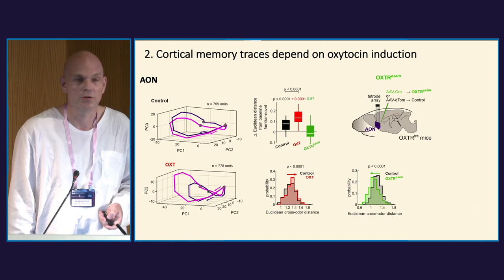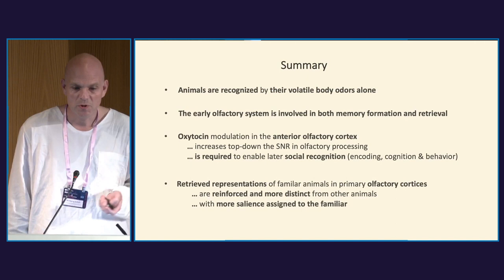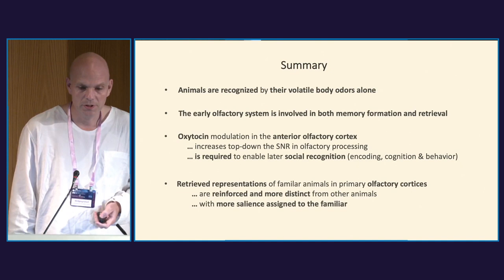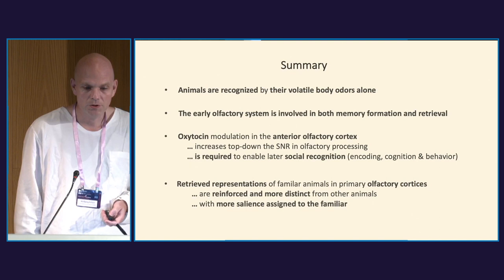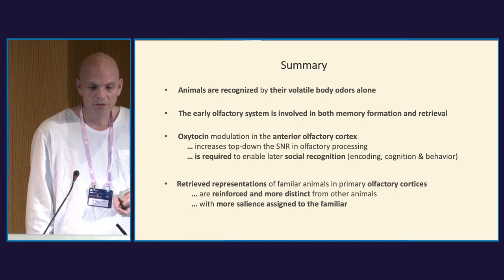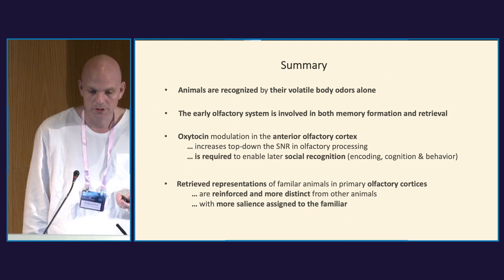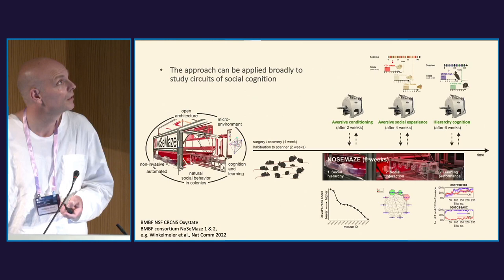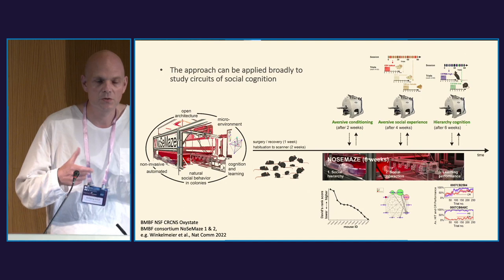To summarize: animals are recognized by their volatile body odors alone, and the early olfactory system is involved in both memory formation and retrieval. Oxytocin modulation in the anterior olfactory cortex increases top-down the SNR in olfactory processing, and is required to enable later social recognition at the level of encoding, cognition, and behavior. The retrieved representation of familiar animals in primary olfactory cortices is reinforced and more distinct from other animals, with more salience assigned to the familiar.